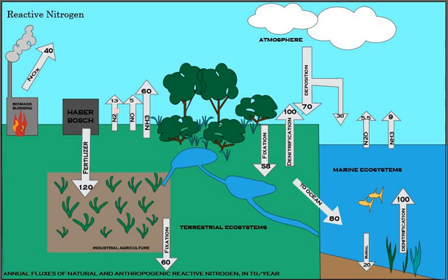Most biological nitrogen fixation occurs by the activity of Mo-nitrogenase, found in a wide variety of bacteria and some archaea. Mo-nitrogenase is a complex two-component enzyme that has multiple metal-containing prosthetic groups. An example of free-living bacteria is Azotobacter. Symbiotic nitrogen-fixing bacteria such as Rhizobium usually live in the root nodules of legumes such as peas, alfalfa, and locust trees. Here they form a mutualistic relationship with the plant, producing ammonia in exchange for carbohydrates, and legumes will often increase the nitrogen content of nitrogen-poor soils.